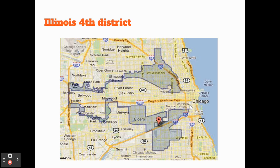We go through this process every 10 years of adjusting the number of reps each state has — that's called reapportionment. If your state loses or gains a rep, we have to redraw your congressional districts — that's called redistricting. And if the state legislature draws districts in a way that benefits the controlling political party, that's called gerrymandering.